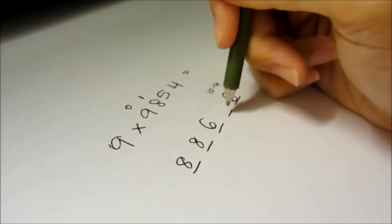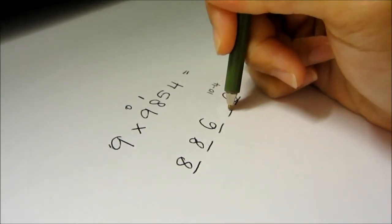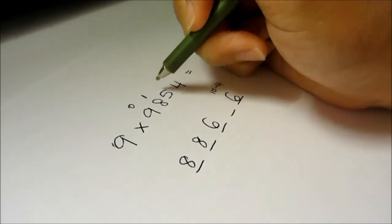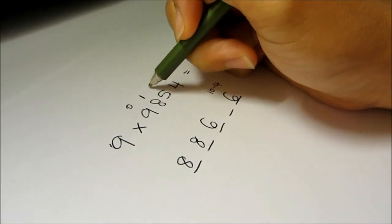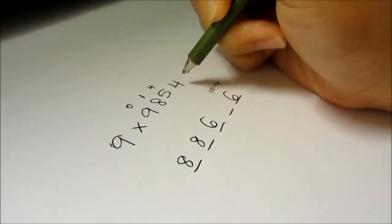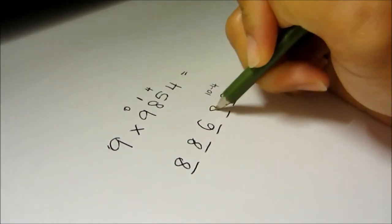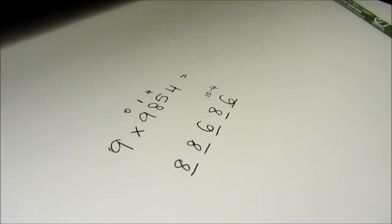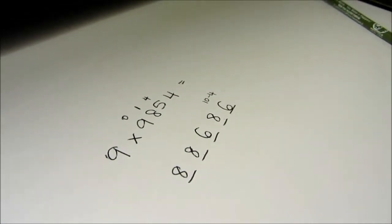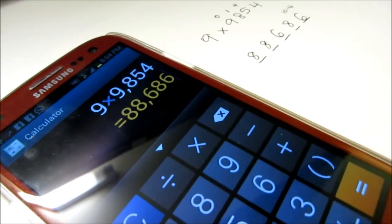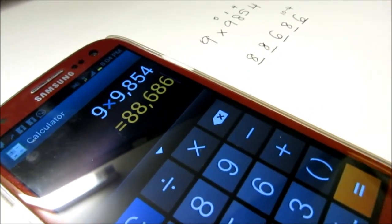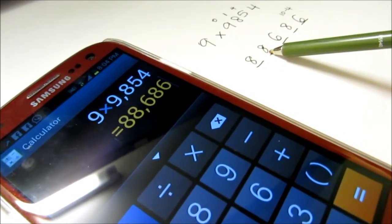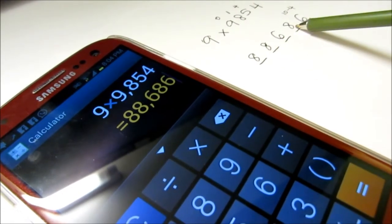For this digit right here, it's going to be 9 minus 5, which is 4. So it's 4 plus 4, so 8. Let's find out — and there you go: 8, 8, 6, 8, 6.